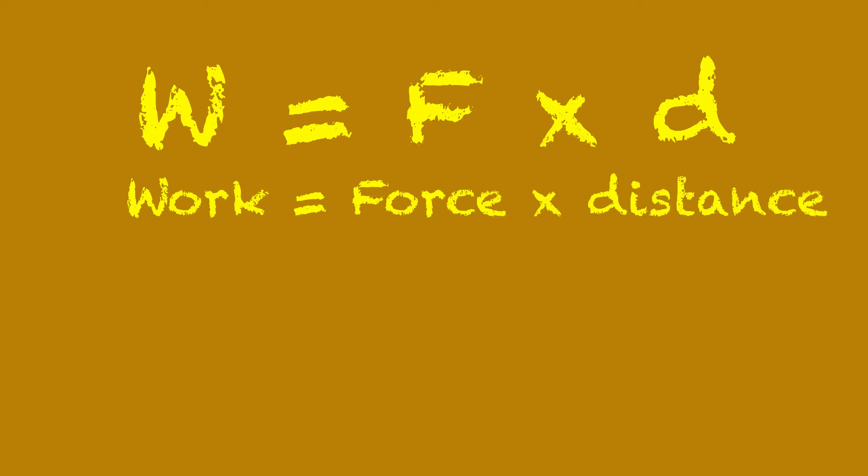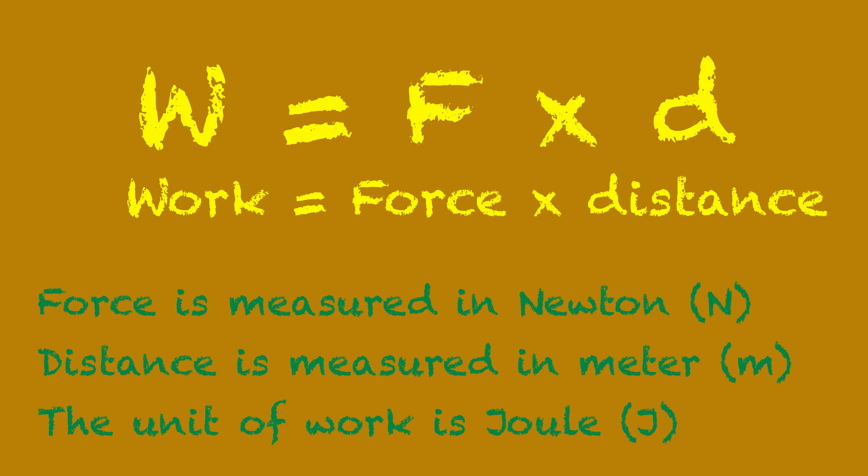Work is calculated by applying this formula. W equals F multiplied by D. Where F represents the force, which is measured in Newton, and D represents the distance, which is measured in meter. Keep in your mind that you have to pay attention to the unit. It is very important, especially when it comes to the distance, that the distance should be measured in meters, not in centimeters. So we have to convert the distance to meter before making any of the calculations. What is the unit of the work? The unit of the work is the joule.